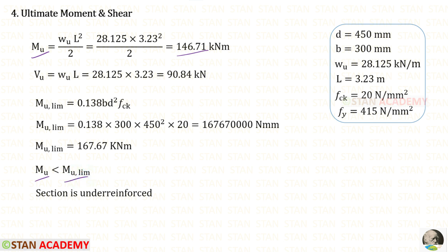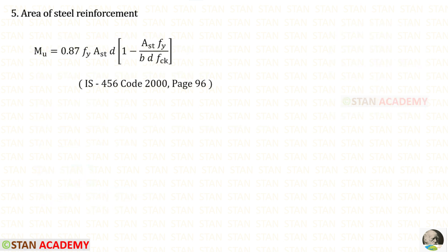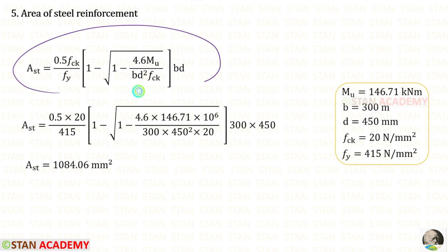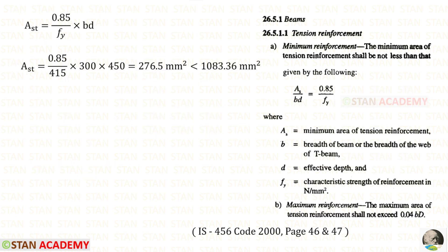We now find the area of tension steel reinforcement Ast. From page number 96 of the code book, we copy the formula and apply all the values. Solving the resulting equation using a calculator, we obtain the required Ast. Alternatively, using a direct formula for Ast gives the same result. We then check for the minimum Ast requirement.